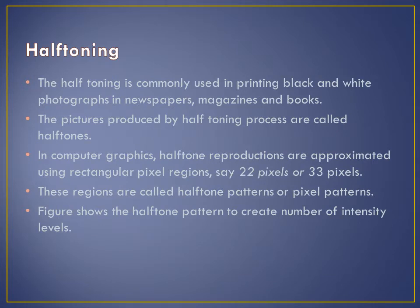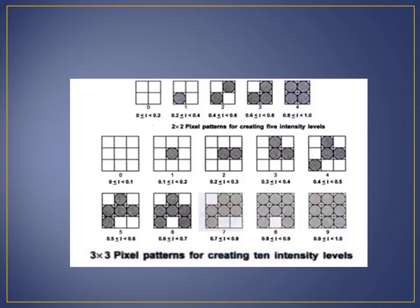Half-toning is commonly used in printing black and white photographs. The picture produced by the half-toning process is called a half-tone. In computer graphics, half-tone reproductions are approximated using rectangular pixel regions — say 2×2 pixels or 3×3 pixels. These regions are called half-tone patterns. With a 3×3 pixel grid on a bi-level system, we can display 10 intensity levels. One way to set up the 10 pixel patterns for these levels is shown in the figure, where pixel positions are chosen so the pattern approximates increasing circle sizes.